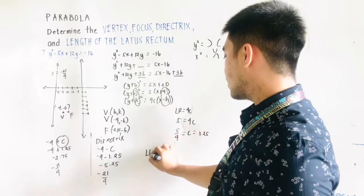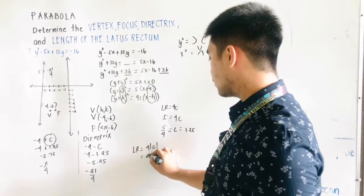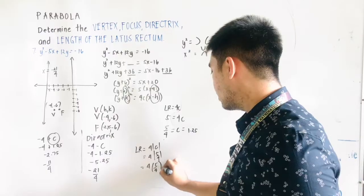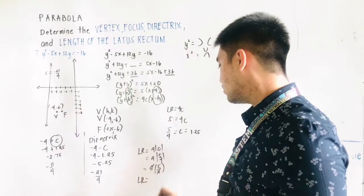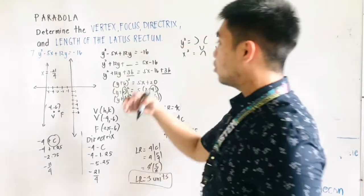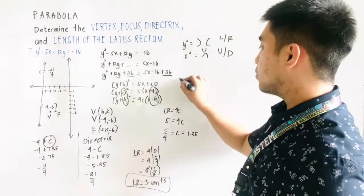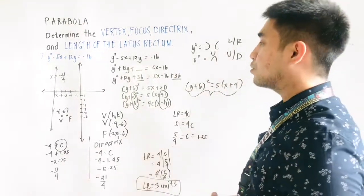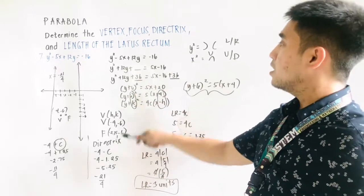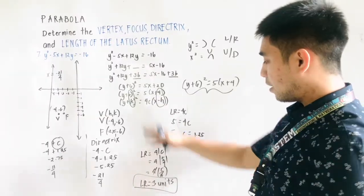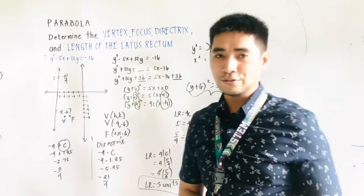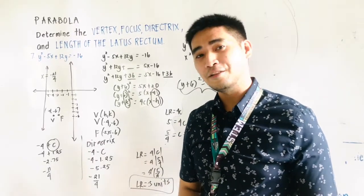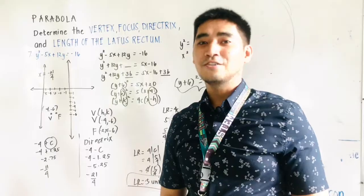The length of the latus rectum is LR = 4|c| = 4 × (5/4). The 4s cancel, giving a latus rectum length of 5 units. So, using completing the square, we obtained the standard equation (y + 6)² = 5(x + 4), and from it we determined: the vertex at (−4, −6), the focus at (−11/4, −6), the directrix x = −21/4, and the latus rectum length of 5 units. That's all for today — I hope you learned something. Please subscribe to my YouTube channel. I am Engineer Jod Edward Hernandez, saying mathematics is always fun. Goodbye and God bless.